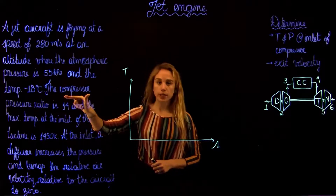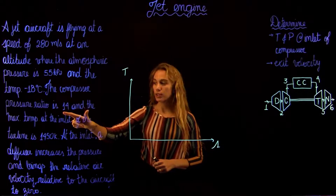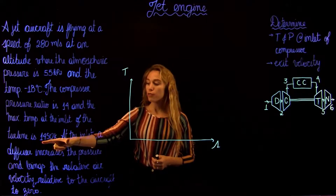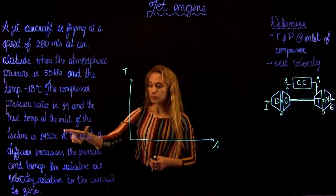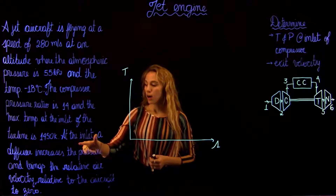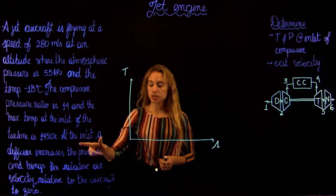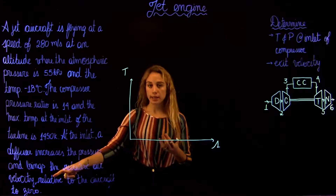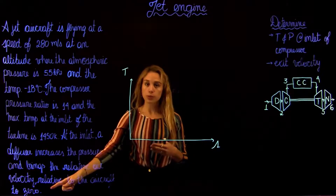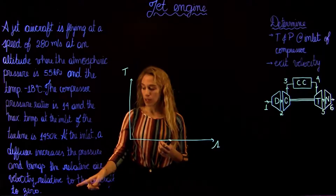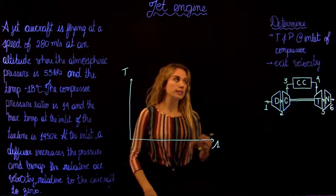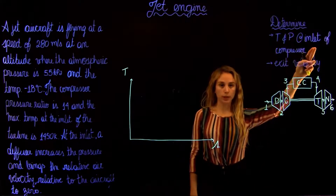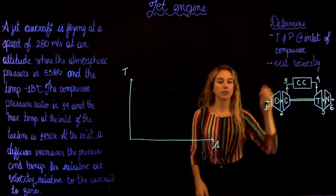We have a compressor ratio of 14 and the maximum temperature is 1450 kelvins. At the inlet of the jet engine, a diffuser increases the pressure and brings the relative air velocity, relative to the aircraft, to zero. We are first asked to find the temperature and pressure at the inlet of the compressor, and then to find the exit velocity.